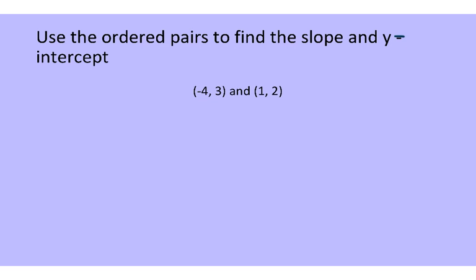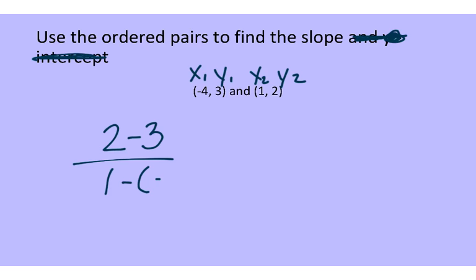For our very last problem, we're not making a table — we're just given two ordered pairs. Take those ordered pairs, plug them into the formula, and find the slope. I'll mark mine as x1, x2, y1, y2 and plug in: y2 minus y1 is 2 take away 3, over x2 minus x1 which is 1 take away negative 4. That gives negative 1 over 5, so the slope is negative 1/5.